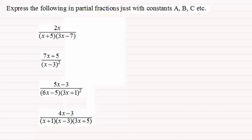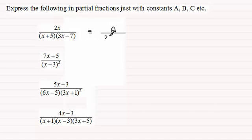For this first one, 2x divided by (x+5)(3x-7), what we've got here are two linear factors. I showed you that if that was the case, you would have a constant, say a, divided by the first linear factor, x+5, and then add another constant, say b, divided by the other linear factor, 3x-7.